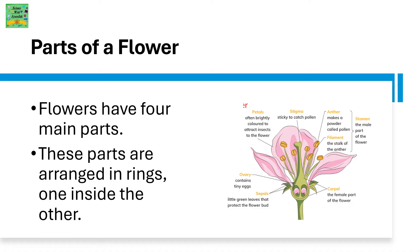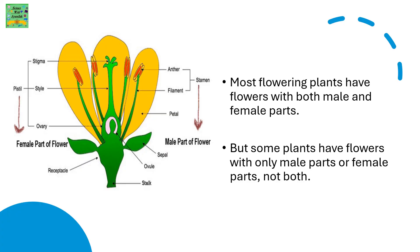Now let's learn about the parts of a flower. Flowers have four parts, arranged in rings one inside the other. Most flowering plants have flowers with both male and female parts — the stamen and carpel, or the pistil. But some plants have flowers with only one male part or female part, and not both.